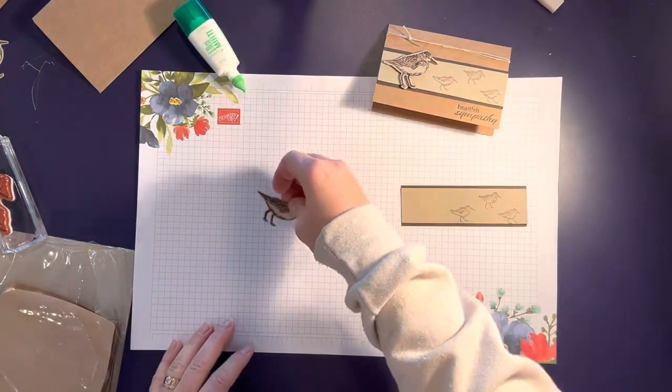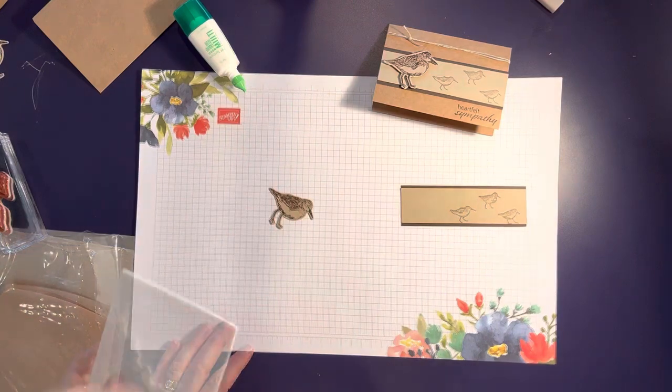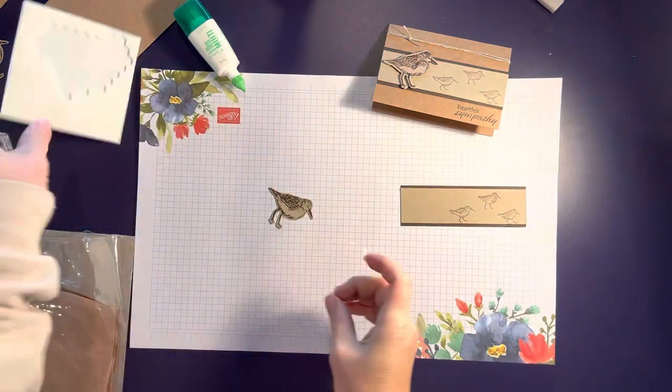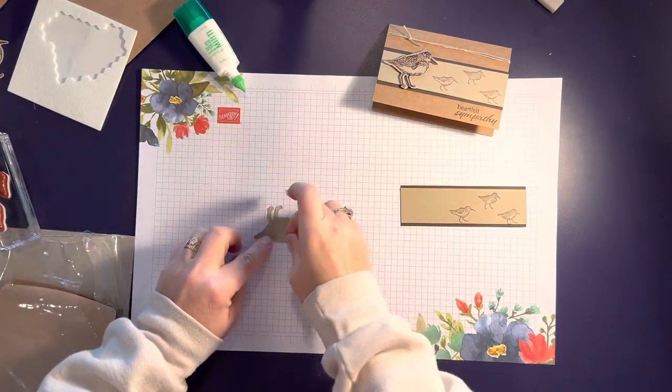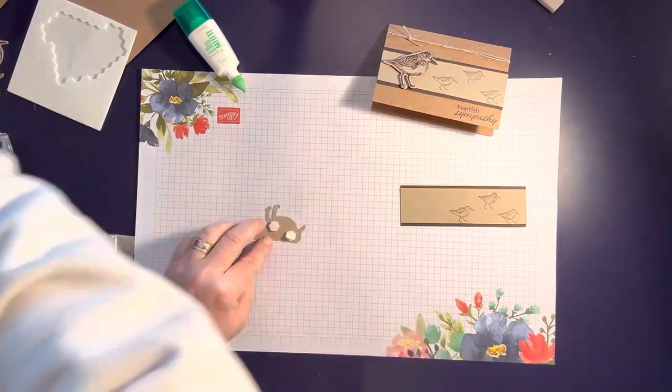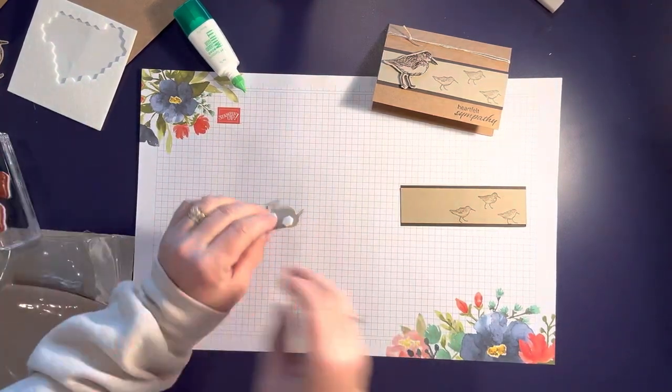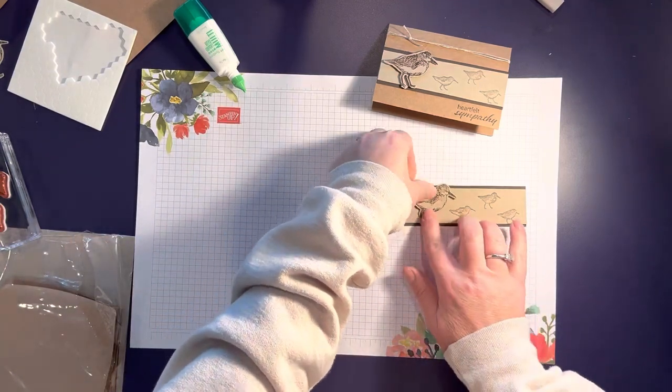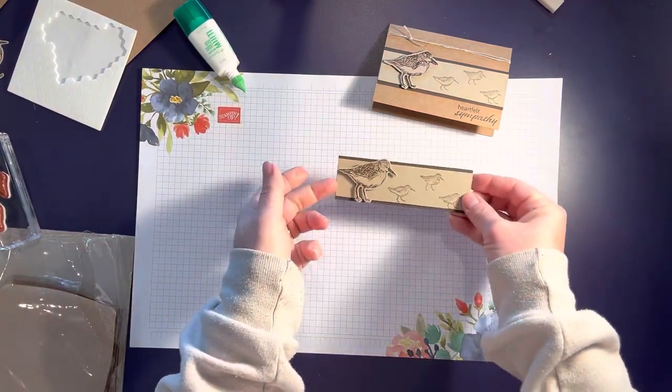Now for this I'm going to get a dimensional. I'm just going to put two on the back of the bird here. And this bird will be on the edge like that.